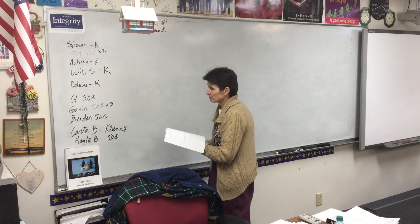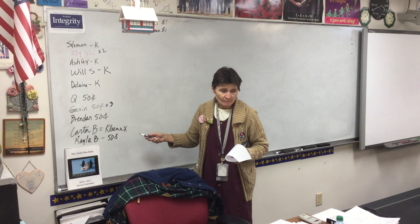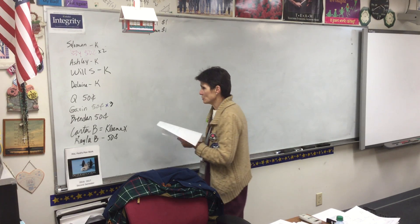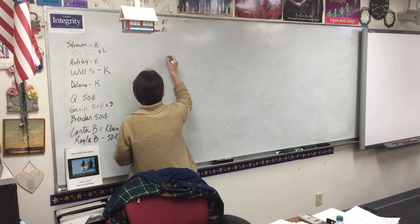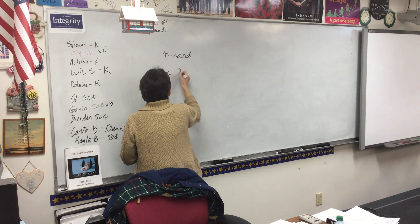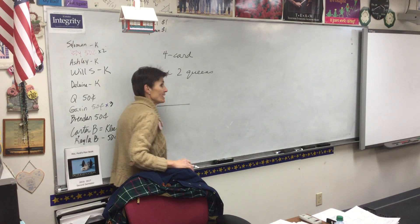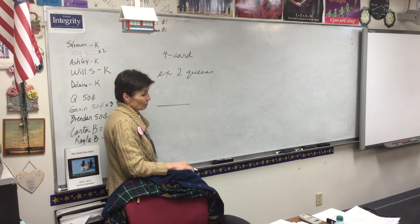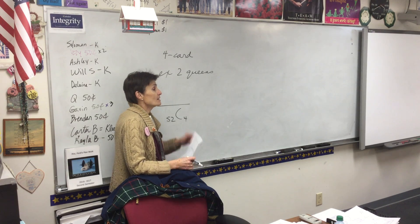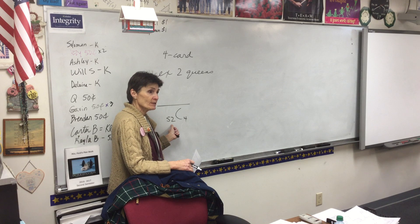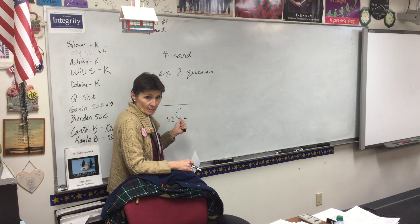Number one: four cards are dealt from a standard deck. What's the probability that there will be exactly two queens? So I'm going to have a four-card hand, and I want exactly two queens. This is a probability question, which means it's going to have a denominator. What is the denominator going to be? Not 52 — it's 52C4. Why 52C4? Because it's four cards. The denominator gets the total. How many total cards are in the deck? 52. How many are you picking? Four. So 52C4 is your denominator.